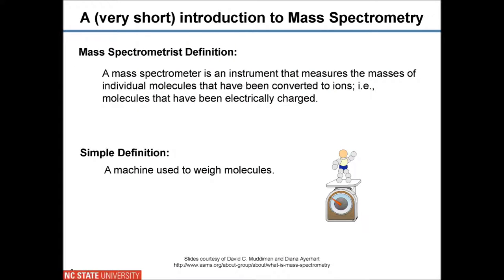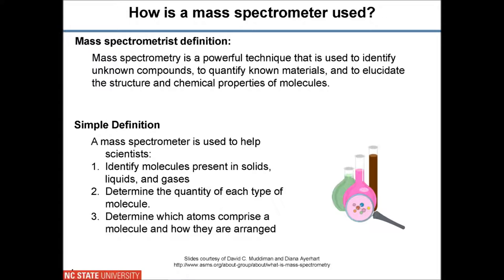Mass spectrometry is a huge science, and even though it develops very quickly and is already into its second century — so it's a bit of a mature technology — there is still a lot to do. Starting from the very basics: what is mass spectrometry? We could have a very complicated definition, but generally this is a machine to weigh molecules. Mass spectrometry is used to identify molecules in all types of materials — solids, liquids, gases — it could be used for quantitation, and it could be used for structural analysis of molecules.